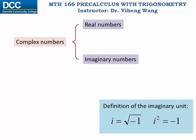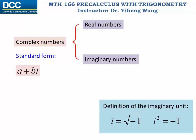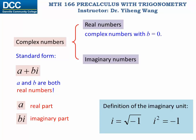With the definition of the imaginary unit, complex numbers have the standard form of a plus bi. Both a and b are real numbers. A is the real part of the complex number, and b times i is the imaginary part. Real numbers are complex numbers with an imaginary part of zero. Imaginary numbers are also complex numbers with imaginary part non-zero.